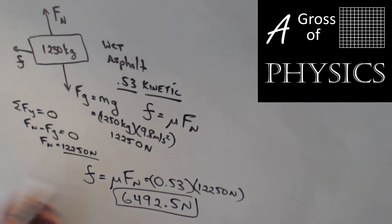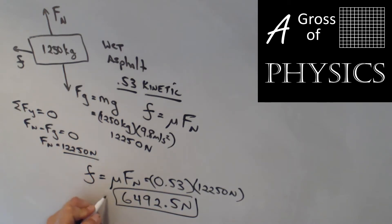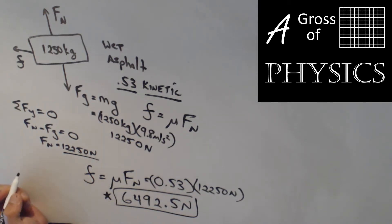That is when the car is moving. We don't know anything about its forward motion right now, so this is as far as we can calculate with what we are given: 6,492.5 newtons of kinetic friction.